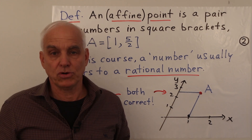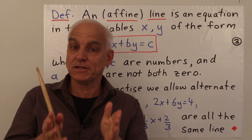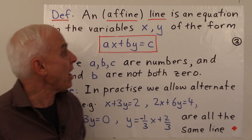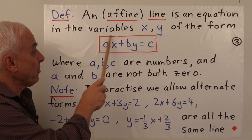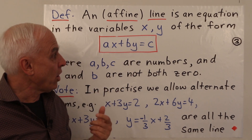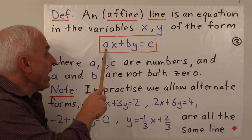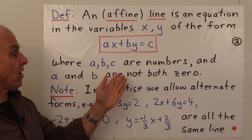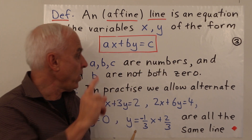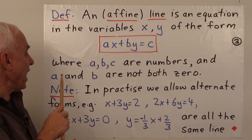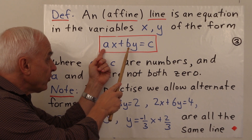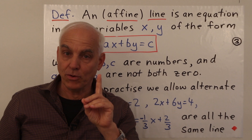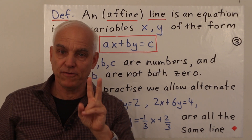Our second definition is that of an affine line. A line for us is an equation in the variables x and y of the form ax + by = c, where a, b, and c are numbers, with the crucial condition that a and b are not both zero — one of them can be zero, but not both of them.